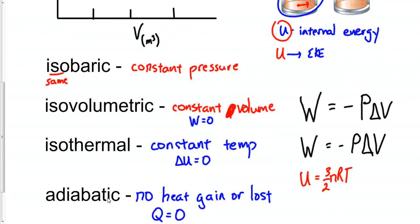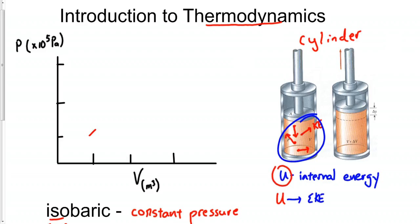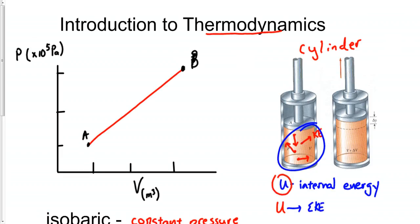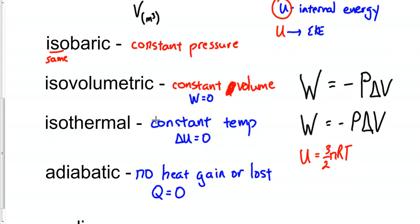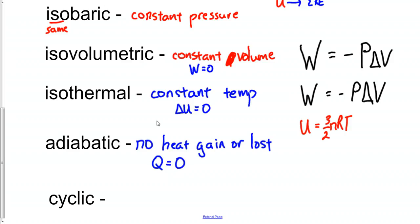Sometimes a problem is cyclic. That means the gas travels through several points — say A to B to C — and works its way back to point A. In a cyclic process you end up where you started, so pressure and volume are the same, which means temperature is the same, and therefore there is no change in internal energy.